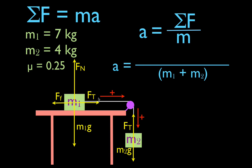Object M1 moves to the right along the x-axis. There are two forces acting along the x-axis: the tension force Ft, which is positive, and the friction force, which acts in the opposite direction and is negative. So we write Ft minus the friction force. The normal force and weight of M1 don't affect the horizontal motion and were accounted for when calculating the friction force.